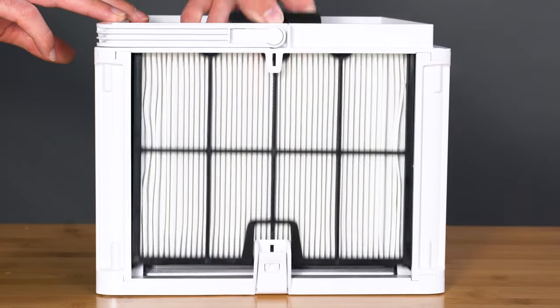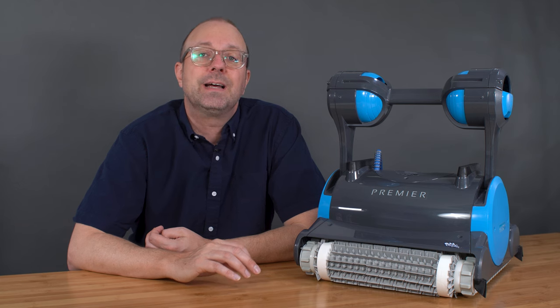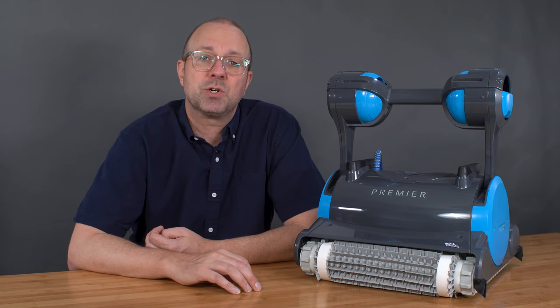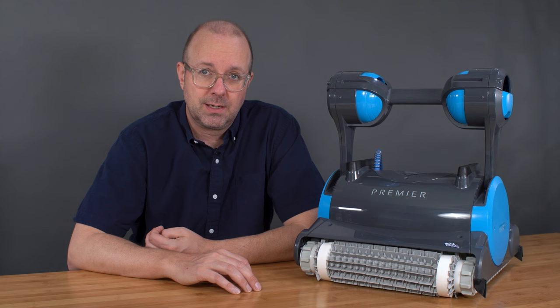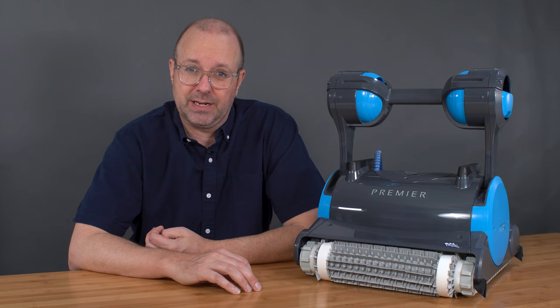As you can see, the pleated material of the nano filter gives the robot much more surface area than the standard filter. In fact, it's about three times the surface area. The nano filter captures what your standard filter misses. It's great for capturing even the smallest dirt, sand, pollen, algae, and pet dander.